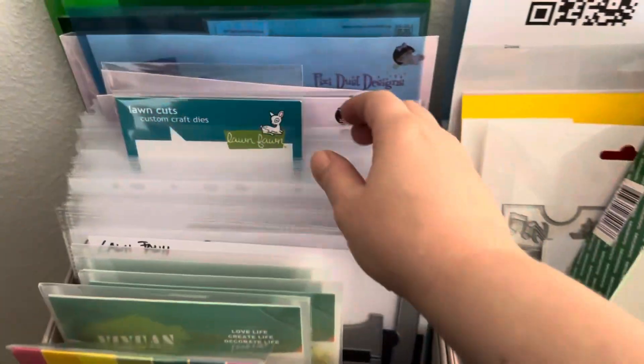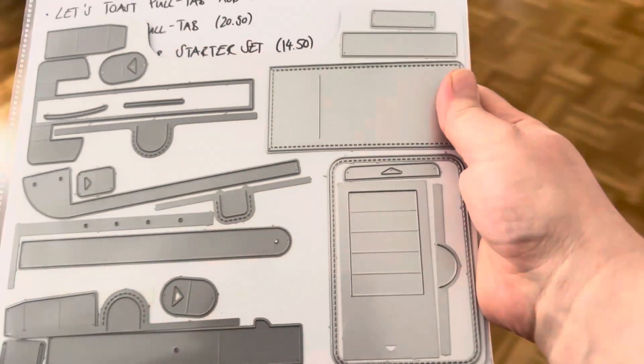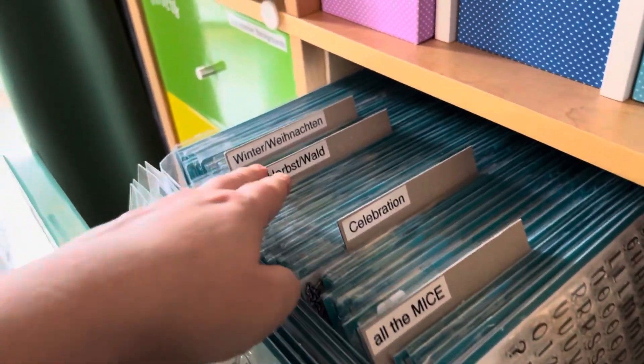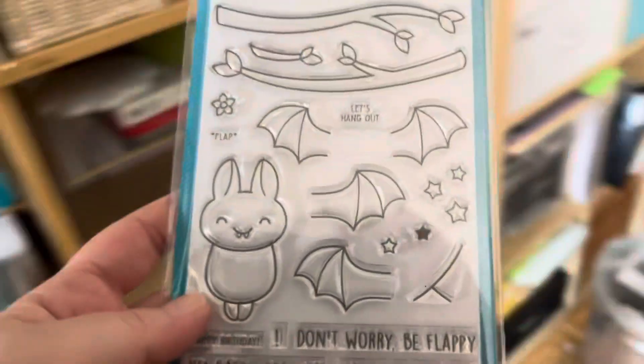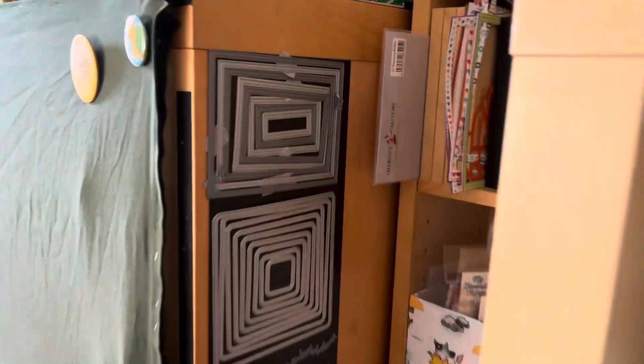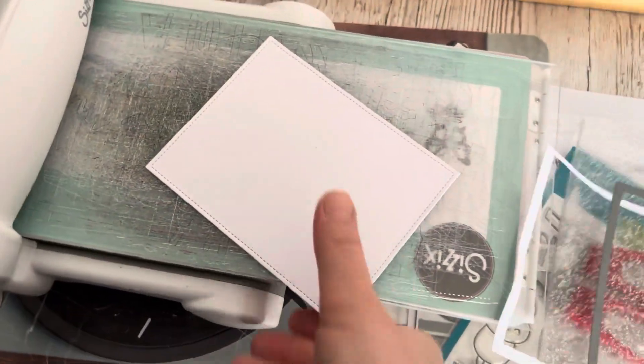First I got my interactive die, the waving pull tab. I have all those pull tab things on one sheet. Then I went to my Lawn Fawn stamp drawer and got the Batty for You stamp set. I took my very thick paper, I think 350 grams, and this is the biggest of the stackable stitched rectangles, all from Lawn Fawn. I cut out my background panel.